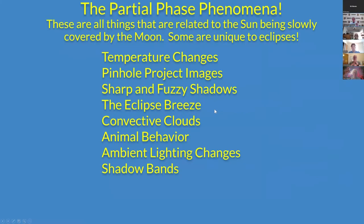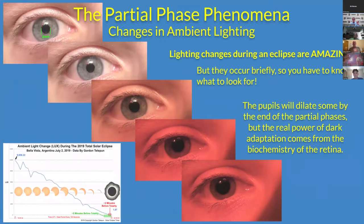I'm going to dive into the partial phase phenomena now. These are all the things related to the sun being slowly covered by the moon, and some are unique to eclipses. One of the most detailed, hard to understand, but fascinating things is the change in ambient lighting.